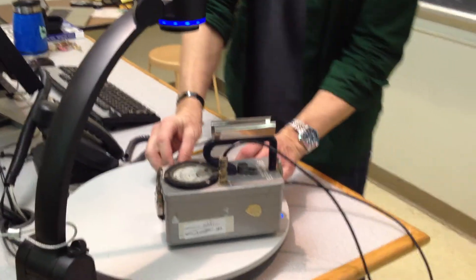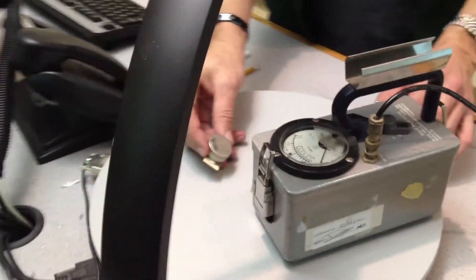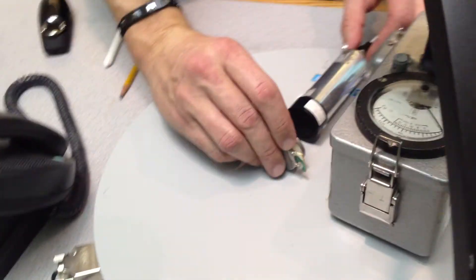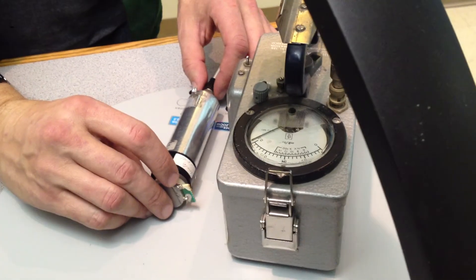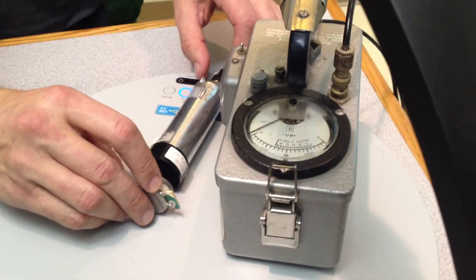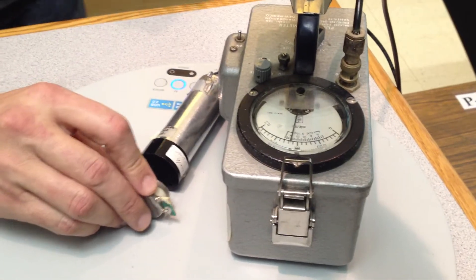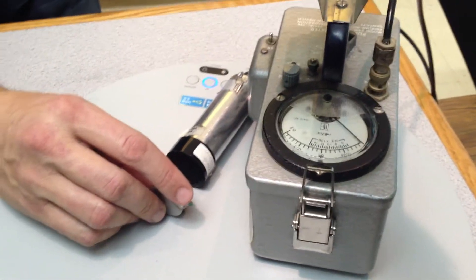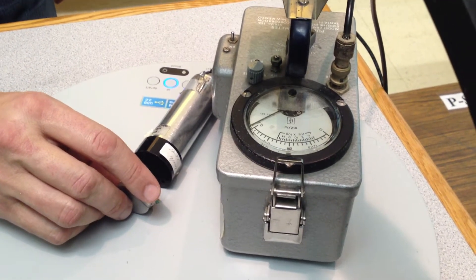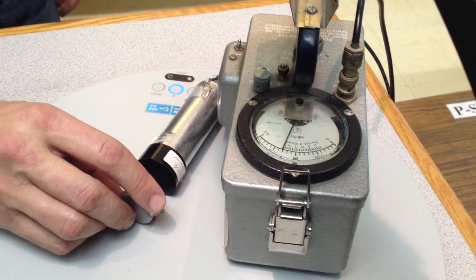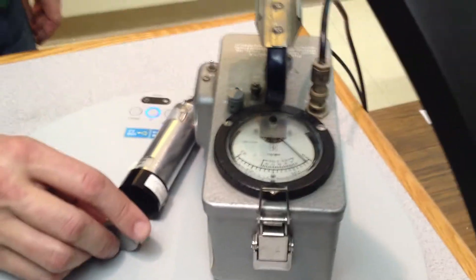There. So, here is the source. There's the detector. Whoa. And the crowd goes wild. Alright. So, you'll notice this source of ionizing radiation doesn't travel through air very far, does it?